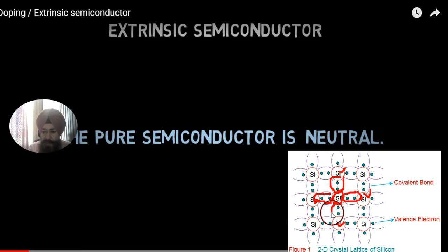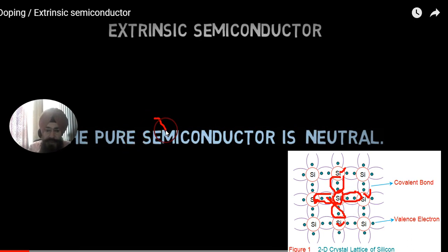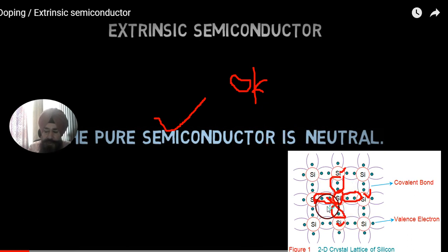Now this silicon atom has eight electrons in the valence shell, so it is saturated with a noble gas configuration. There is no free electron. No free electron means the pure semiconductor is an insulator at 0 Kelvin (minus 273 degrees Celsius), because at that temperature all bonds are intact — no broken bonds, no electrons or holes, no carriers to conduct electricity.